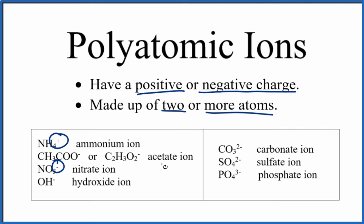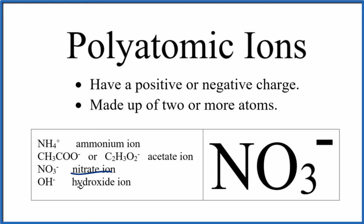For example, the nitrate ion here, NO3-, has a negative charge — actually one minus — and it has one plus three, four atoms total, making it a polyatomic ion.